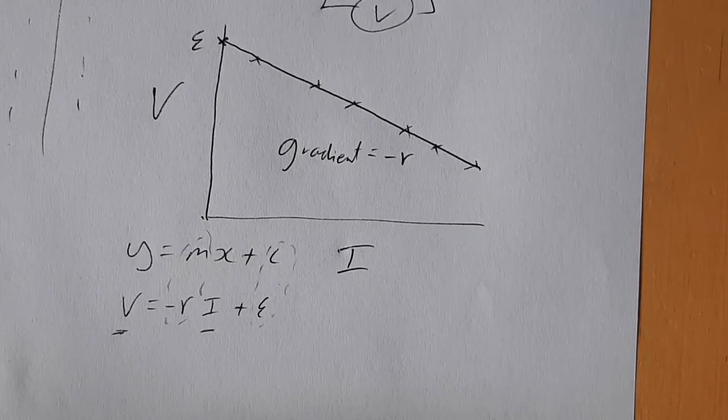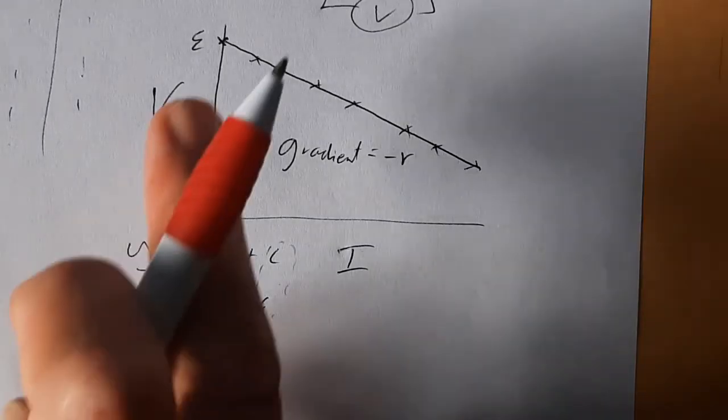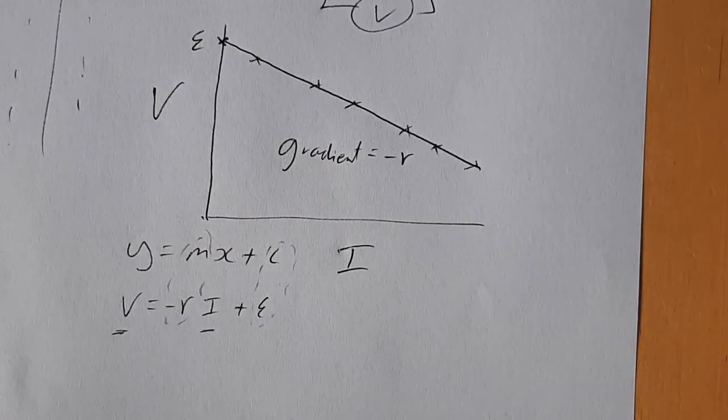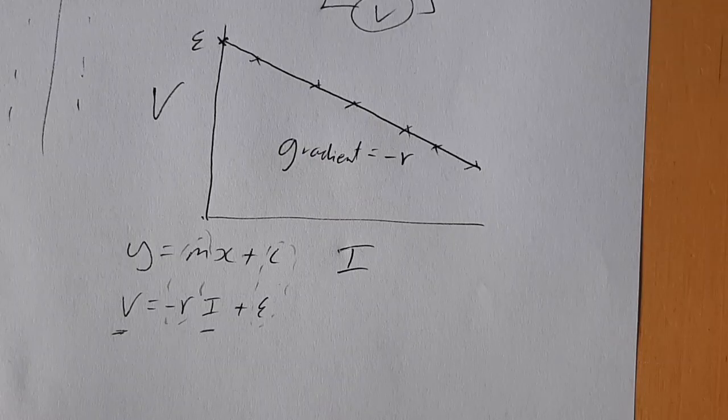Gradient's three. Internal resistance. Gradient's minus three. Internal resistance must be three ohms. Do you see what the intercept is? Job done. So don't be defeatist. With practice, you can get there.